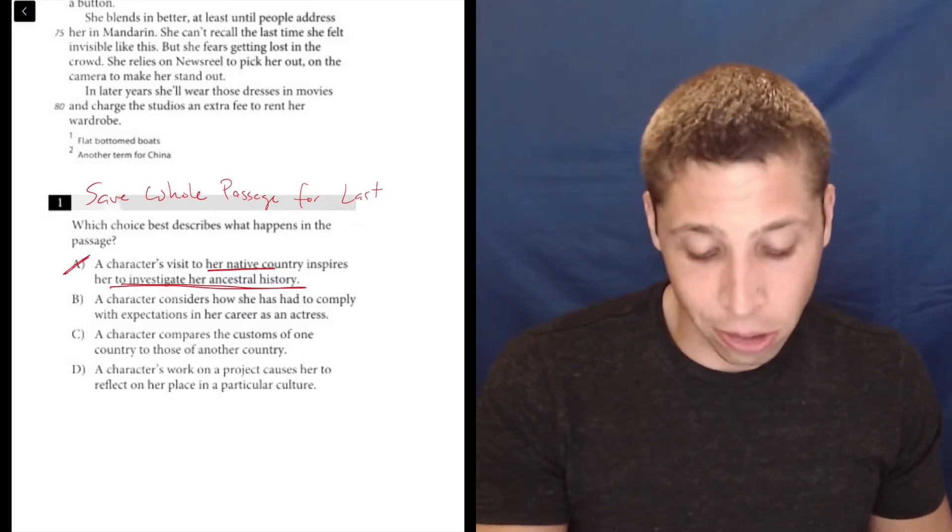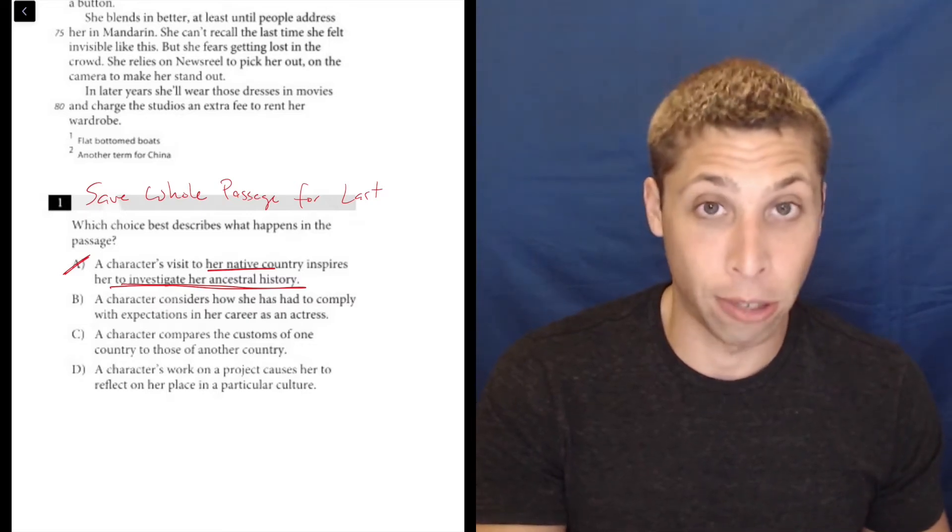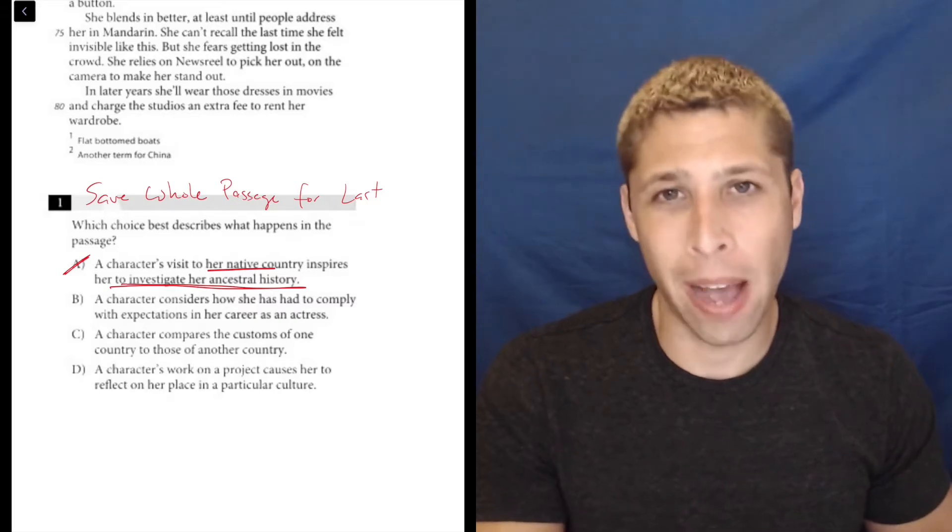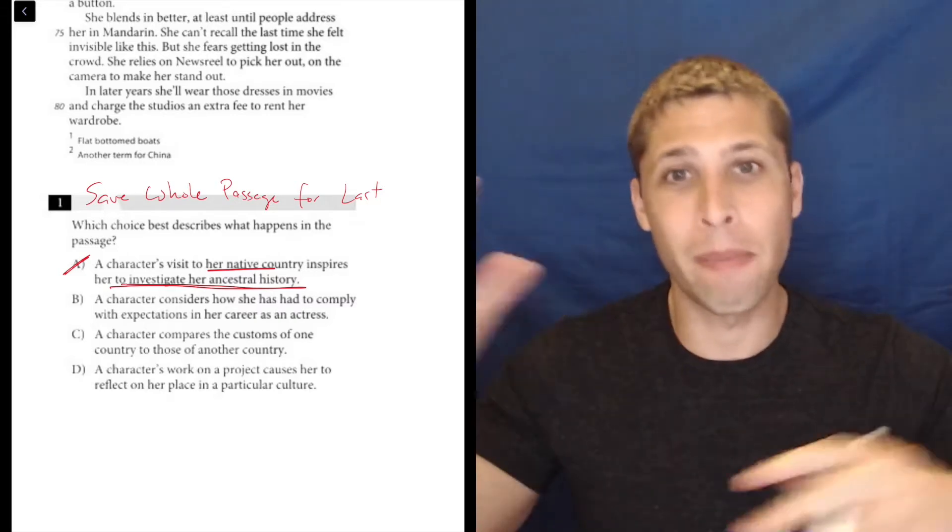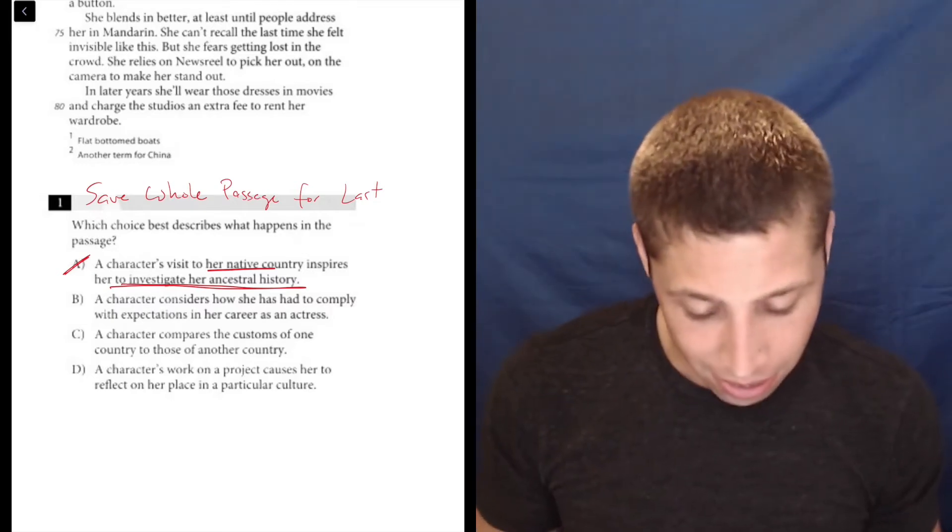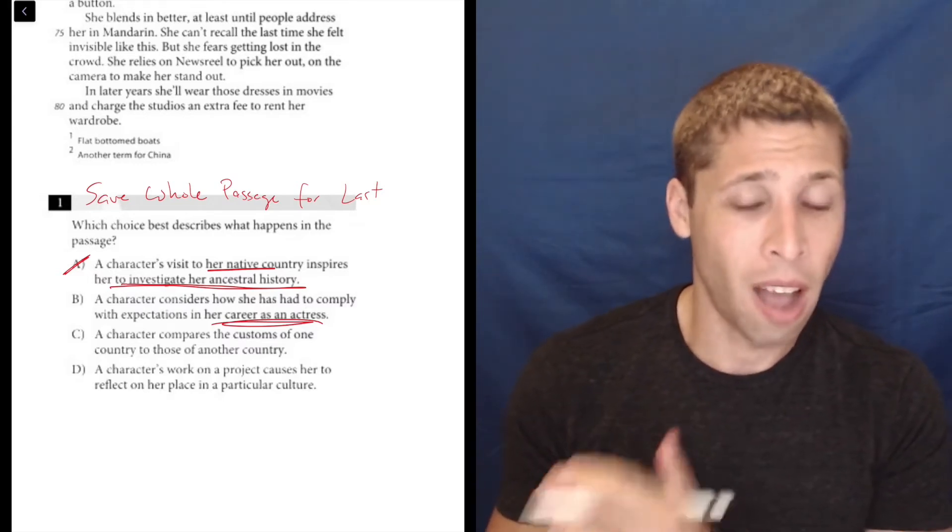So B, a character considers how she had to comply with expectations in her career as an actress. Well, it does say that she's an actress, but if we remember the passage, it barely talked about what it was like to be an actress. She's on this one trip and occasionally she mentions how it's reminding her of things she did. But her career as an actress is definitely not the focus of this passage.